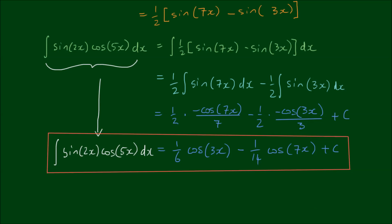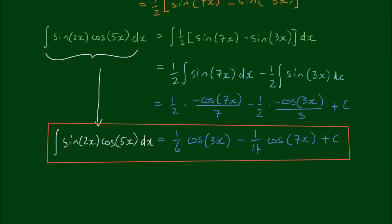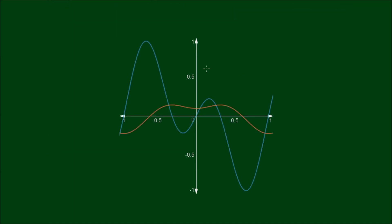Okay, let's just briefly confirm this result by looking at it graphically. All right, so on this chart here, this turquoise curve is the integrand. So that's the function sine of 2x by cos of 5x.